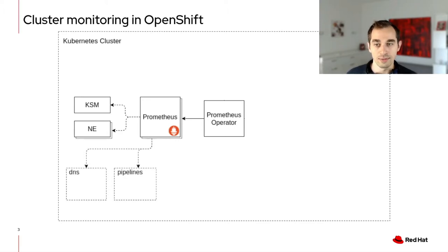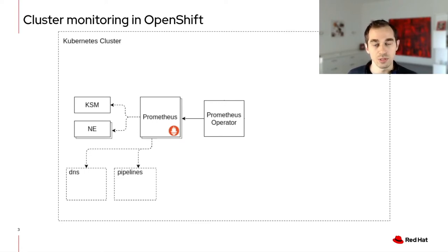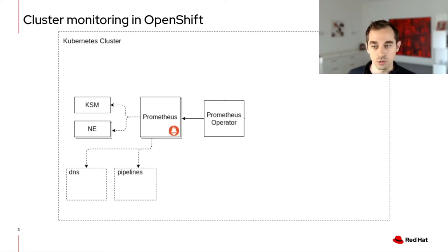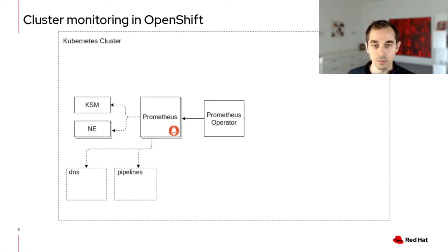In addition to what we have here, we also allow what we consider core OpenShift components to register their targets with this Prometheus instance, and they do that by using the service and pod monitors provided by the Prometheus operator. The operator then scrapes those resources and configures Prometheus to scrape core OpenShift components. This setup has all of the metrics required for monitoring OpenShift as a platform, which is why we call this the platform monitoring Prometheus.